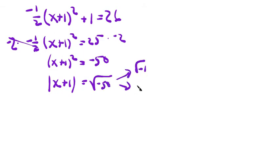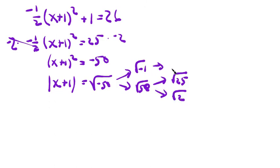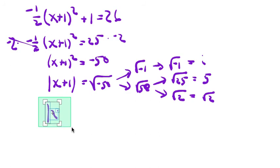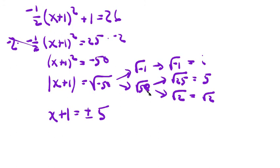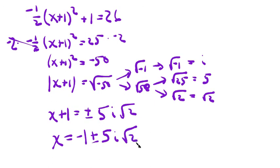We separate the negative 1 from the 50. Since 50 is divisible by the perfect square 25, and 25 times 2 is 50: the square root of negative 1 is i, the square root of 25 is 5, and the square root of 2 we leave as is. To remove the absolute value, x plus 1 equals positive or negative 5i root 2 — number first, then i, then square root. Subtracting 1 from both sides, x equals negative 1 plus or minus 5i root 2. There's our answer.